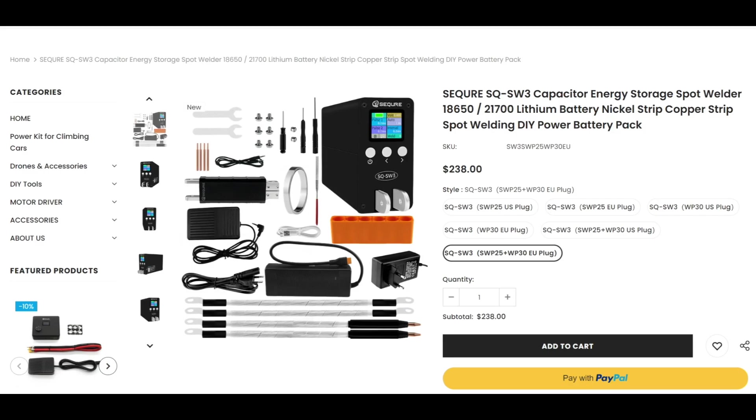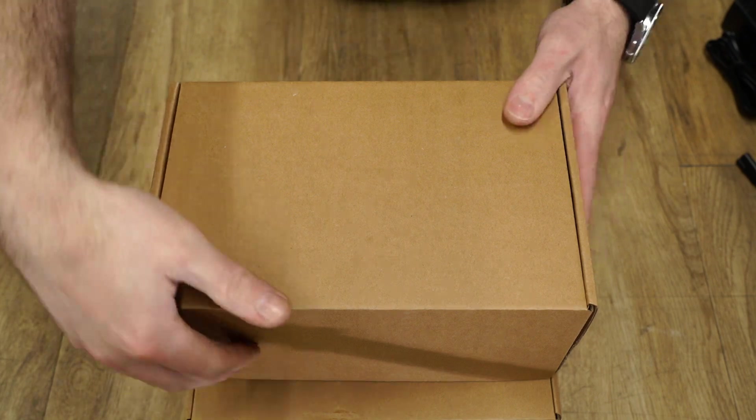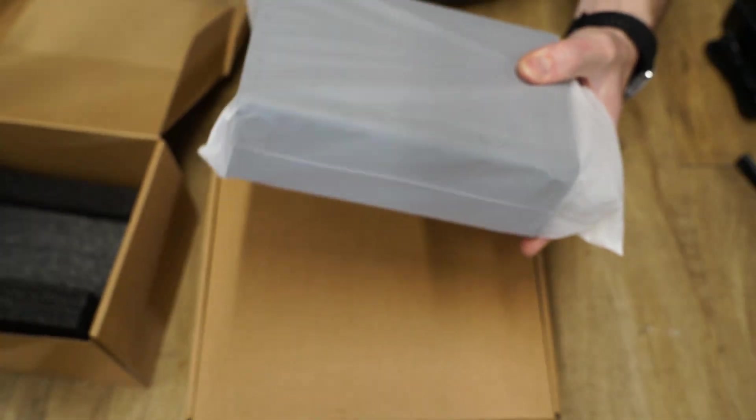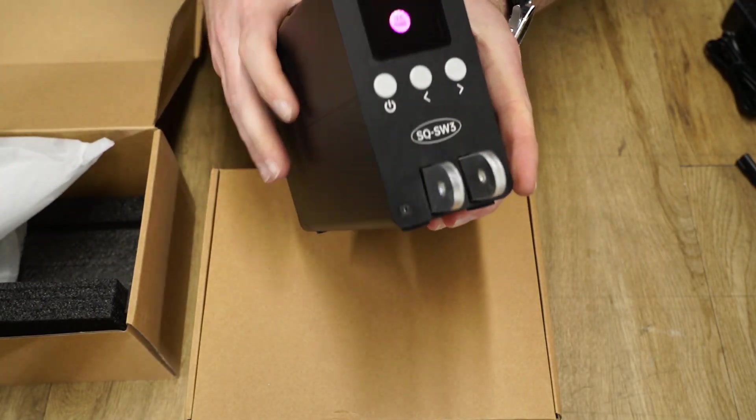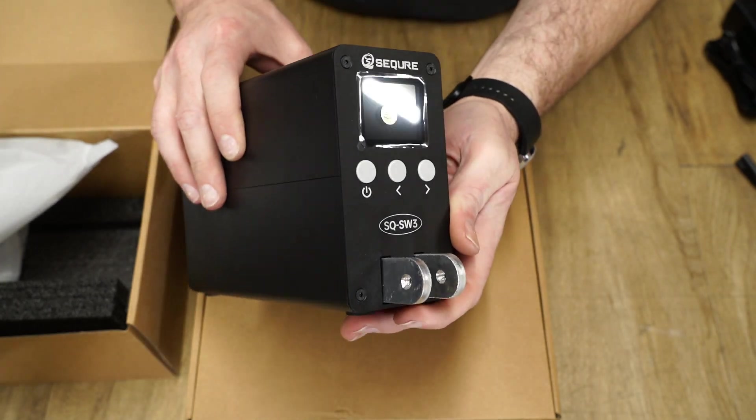The kit I have includes two types of spot welding electrodes. The SW3 spot welder uses two large supercapacitors for energy storage.